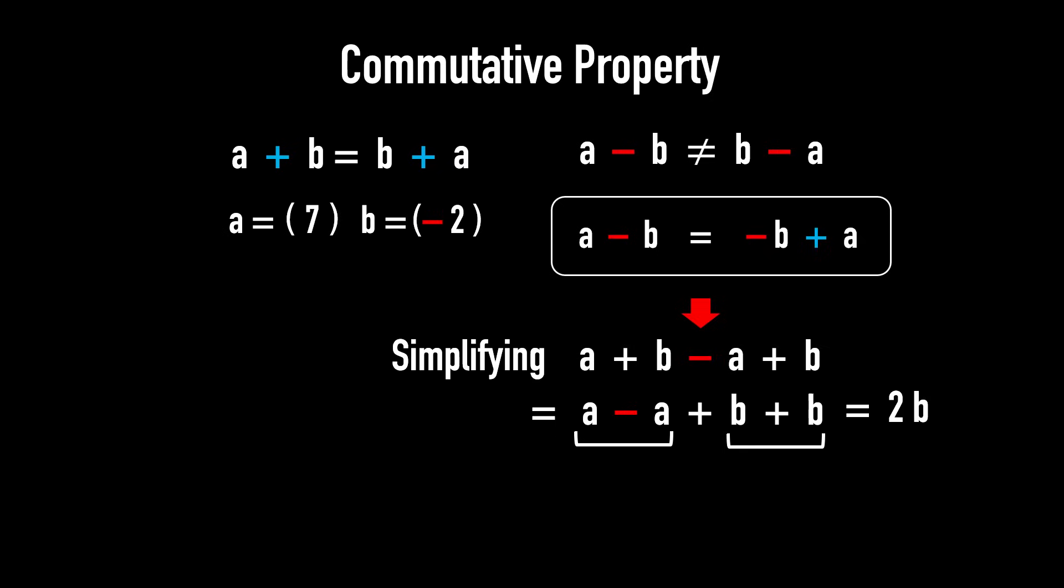Now, let me show you what happens if you don't move the minus sign with a. You'd get a plus a minus b plus b. Combine like terms. And you'd get 2a, which is incorrect. Never do that.